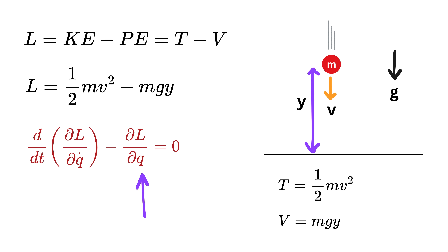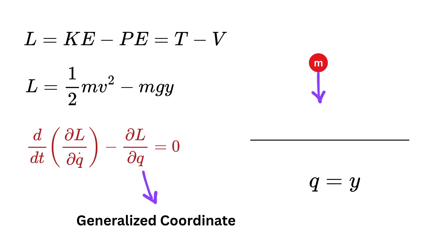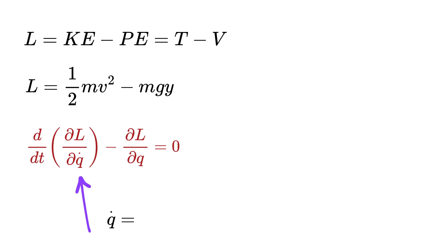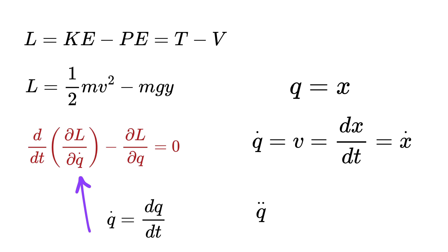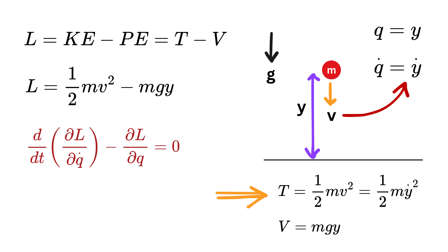Here q is any generalized coordinate chosen to describe the system. For example, q equals x if the system is moving in a straight line along the x-axis, or q equals theta if we are using a polar coordinate system, say for the angle of a pendulum. Then q-dot is simply the rate of change of q with respect to time — if q is position, q-dot is velocity, and q-double-dot is acceleration.